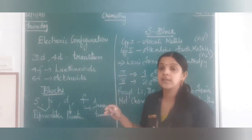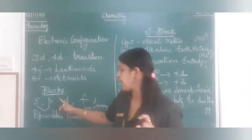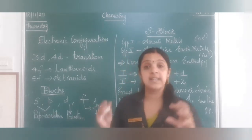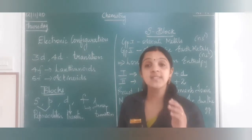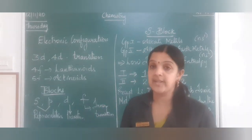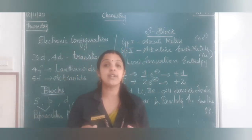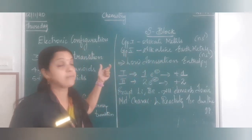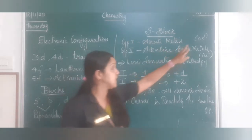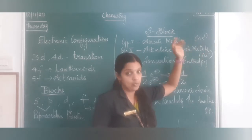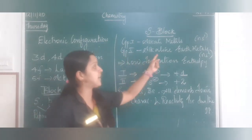When talking about blocks, the periodic table has primarily 4 blocks: S, P, D, and F. S and P blocks are the main blocks — also called representative elements. D block lies between S and P, so it is called transition elements. F block elements are called inner transition elements. The S block primarily consists of 2 groups, located in the left corner of the periodic table.